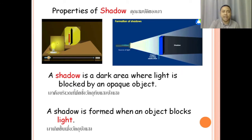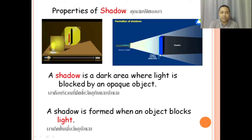And now, a shadow — properties of shadow. A shadow is a dark area where light is blocked by an opaque object. A shadow is formed when an object blocks light. This opaque object here blocks the source of light coming from the light source, so this area here is the shadow.